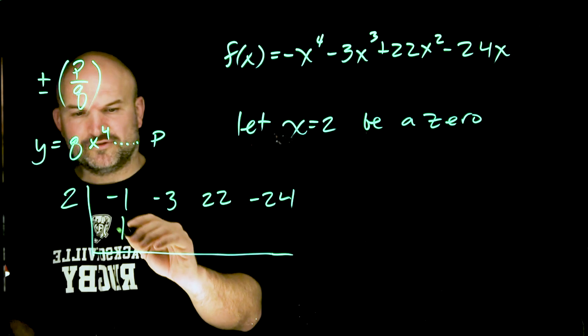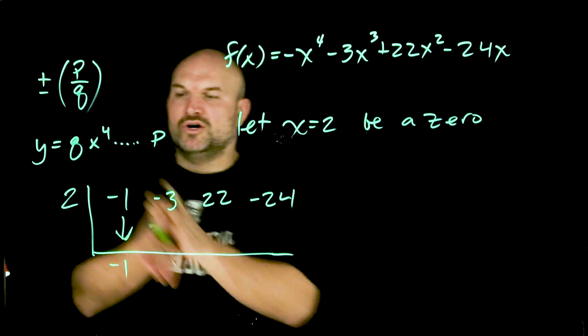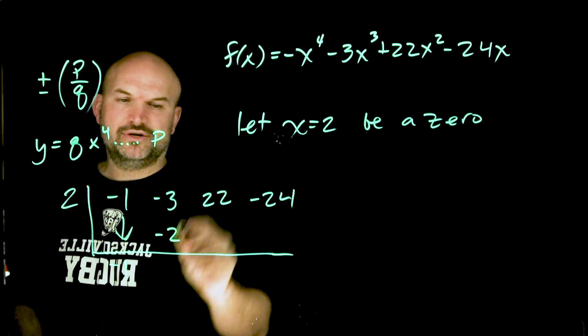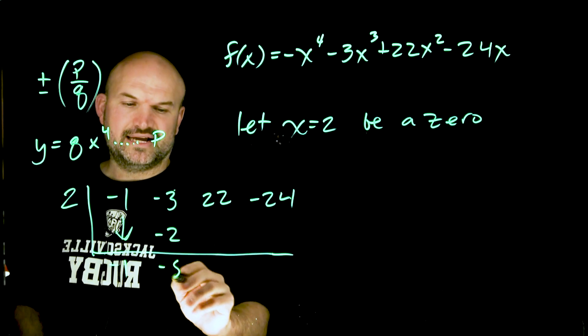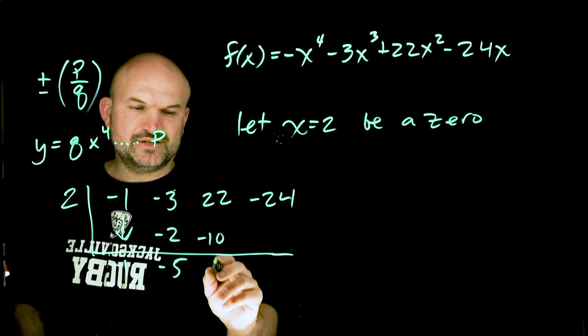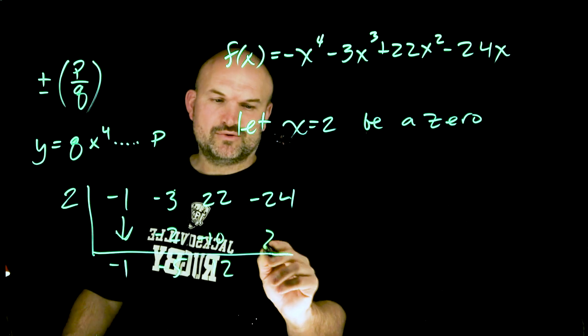To apply the synthetic division algorithm, remember the first term is always a freebie so we bring that one down and then we just continue on multiplying on the diagonal, adding on the vertical. Negative one times two is negative two, negative three plus negative two is negative five. Negative five times two is negative 10, 12 plus 22, 12 plus negative 10 is positive 12. 12 times 2 is going to be 24.